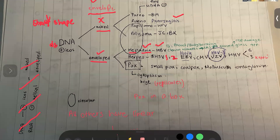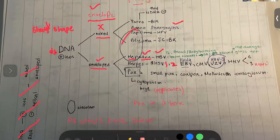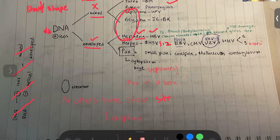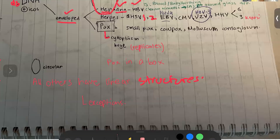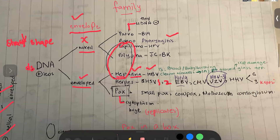Now we will see the exceptions. The circled viruses are circular — all other viruses have linear structures. The circled viruses are papilloma, polyoma, and Hepadnaviruses. They are circular, and all others have linear structures. The ones marked at the outer edges are your exceptions and do not fall in the standard category.